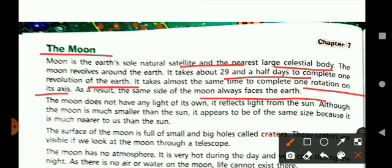Moon does not have any light of its own as we all know. It only reflects light from the sun. Although the moon is much smaller than the sun, it appears to be the same size because it is much nearer to earth than the sun.